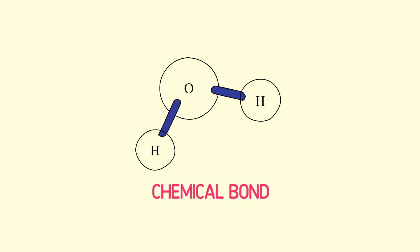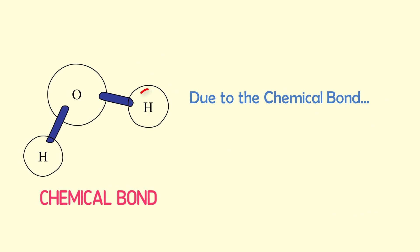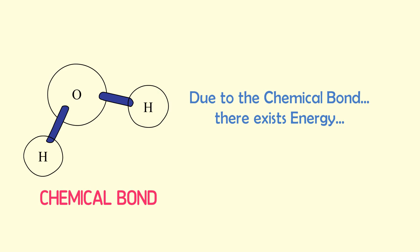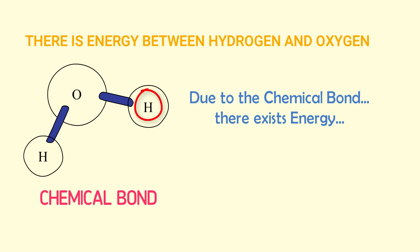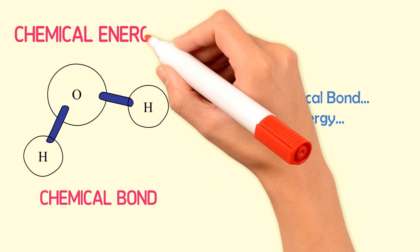So you can say that there is a chemical bond among all these three atoms. Now here comes the most important part of this lecture. Due to the chemical bond between this hydrogen atom and this oxygen atom, there exists energy. So you can say that there is energy between the hydrogen atom and the oxygen atom due to a chemical bond.